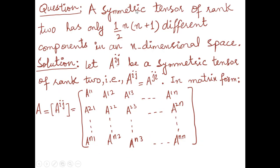Here is a result: we have to show that a symmetric tensor of rank 2 has only (1/2) n(n+1) different components — that is, distinct components — in an n-dimensional space. In general, a symmetric tensor of rank 2 has only (1/2) n(n+1) different components.